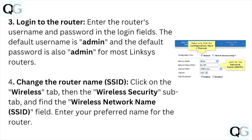The default username is admin and the default password is admin for most Linksys routers. Step four: change the router's name (SSID). Click on the Wireless tab, then the Wireless Security sub-tab, and find the Wireless Network Name (SSID) field.